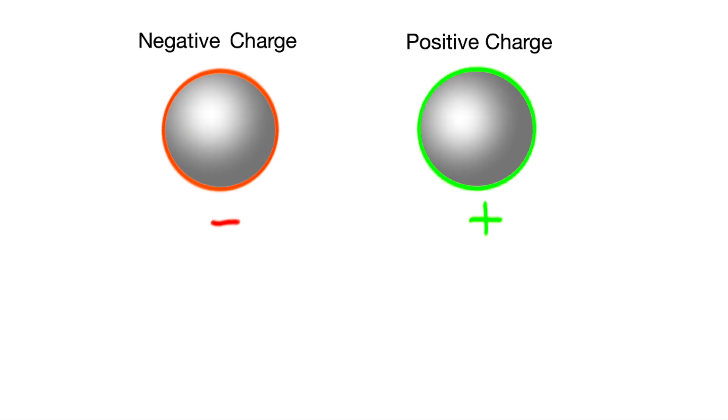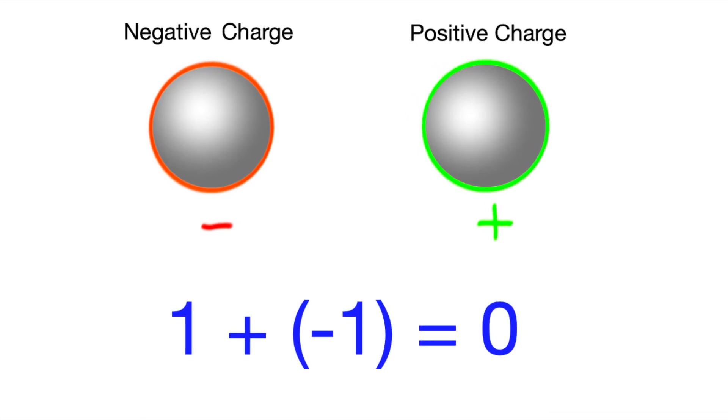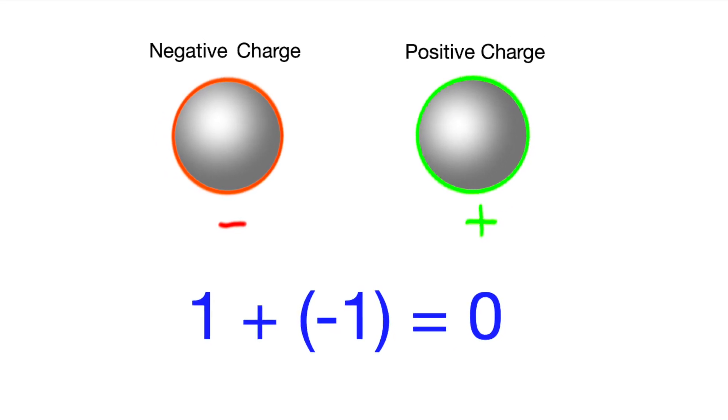That's why the American scientist Benjamin Franklin named the two kinds of charges as positive and negative, because when we add a positive number to a negative number of the same magnitude, the sum becomes zero.